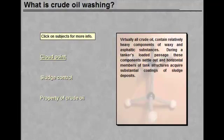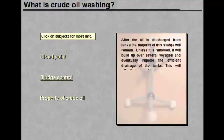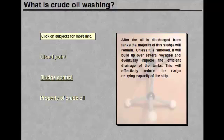Virtually all crude oil contains relatively heavy components of waxy and asphaltic substances. During a tanker's loaded passage, these components settle out and horizontal members of tank structures acquire substantial coatings of sludge deposits. After the oil is discharged from tanks, the majority of this sludge will remain.